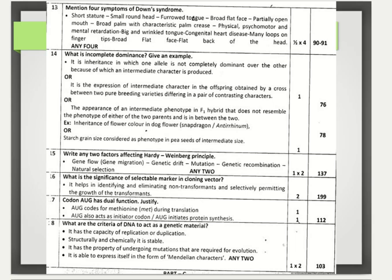Codon AUG has dual function — justify. AUG codes for methionine during translation, and AUG also acts as an initiator codon, initiating protein synthesis. Each point carries one mark. What are the criteria for DNA to act as genetic material? DNA has the capacity of replication, it is structurally and chemically stable, it can undergo mutations required for evolution, and it is able to express itself in the form of Mendelian characters. Any two points are sufficient.